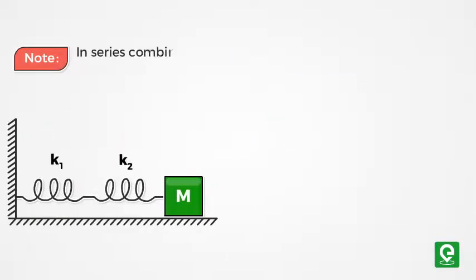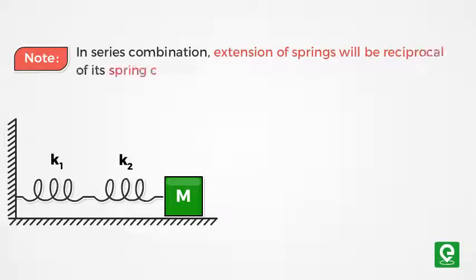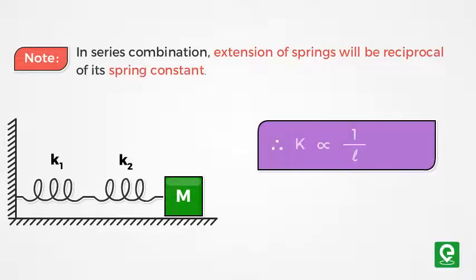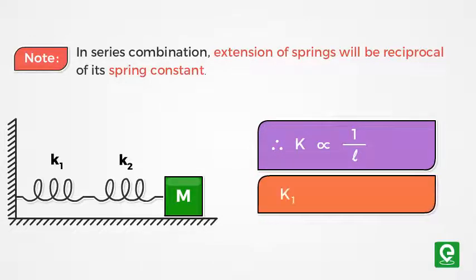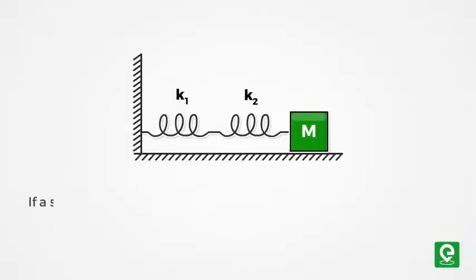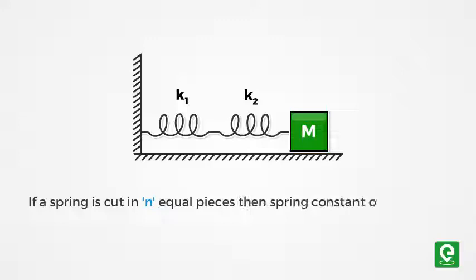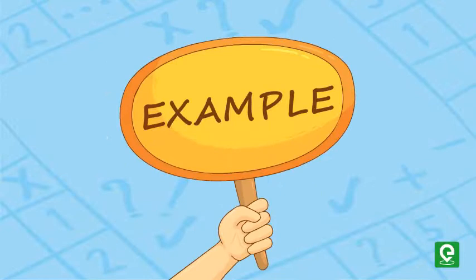Note: in series combination, extension of springs will be reciprocal of its spring constant. Therefore, spring constant is inversely proportional to length. Hence k1·l1 = k2·l2 = k3·l3. If a spring is cut in n equal pieces, then spring constant of one piece will be equal to n times k.